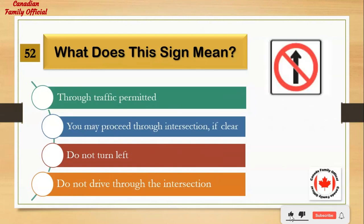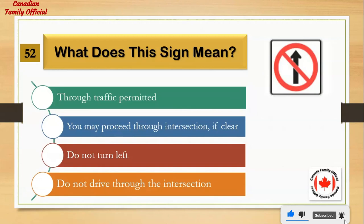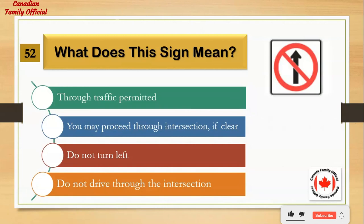What does this sign mean? Number 1: through traffic permitted. Number 2: you may proceed through intersection if clear. Number 3: do not turn left. Number 4: do not drive through the intersection. And the answer is: do not drive through the intersection.